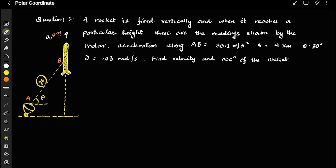The radial direction is r-cap and the corresponding theta-cap is perpendicular to it. The acceleration along the radial direction, a_r, is given. This radial acceleration equals d²r/dt² minus ω²·r, which is the formula we studied in polar coordinate theory.